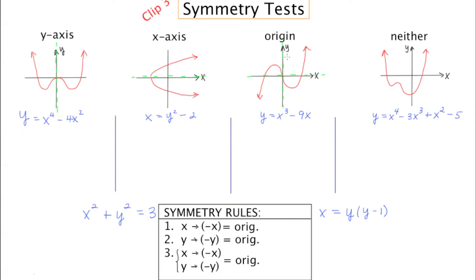In the third example, origin symmetry — there are actually two ways to think about it. The first way is to think about it as a 180-degree rotation, which essentially means turning it completely upside down. Another way is to give the original graph both x- and y-axis symmetry at the same time: flip it upside down and then flip it from right to left. If you end up with the same thing you started with, that means it has origin symmetry.